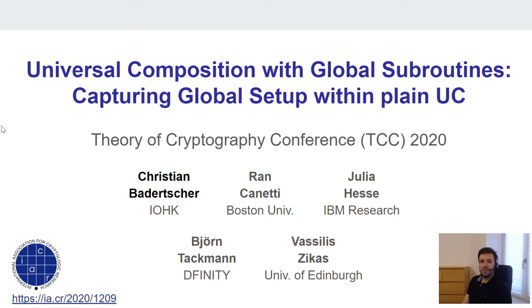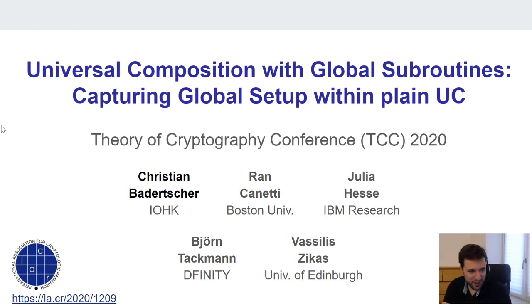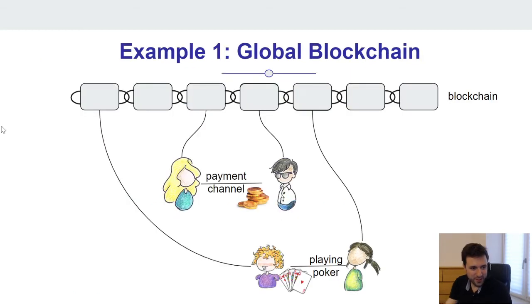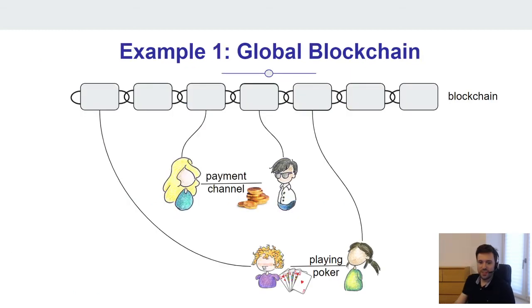The paper is about two major concepts in provable security. On one hand, we will talk about composable security, and on the other hand, we will talk about global subroutines or global setup. Let me start with the first concept, namely global setup.